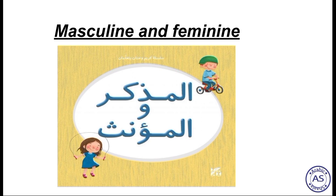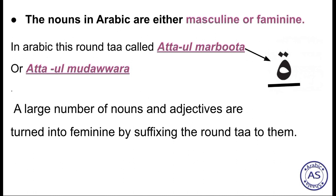Masculine and feminine. In Arabic: Al-Mudhakar wal-Mu'annath. The nouns in Arabic are either masculine or feminine. In Arabic, there is a round letter called At-ta-ul-Murbootah or At-ta-ul-Mudawara — this round-ta is the symbol of feminine. A large number of nouns and adjectives are turned into feminine by suffixing the round-ta to them.